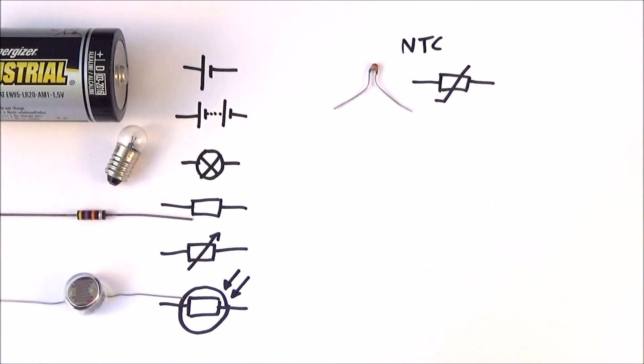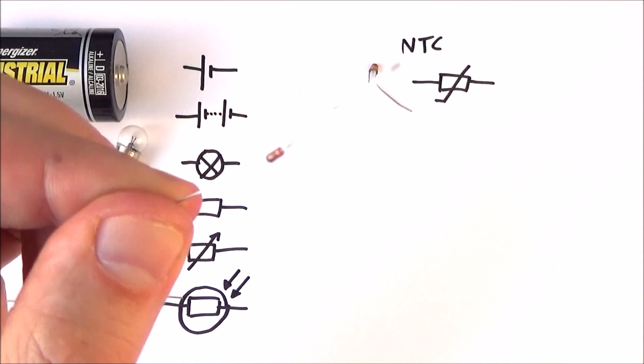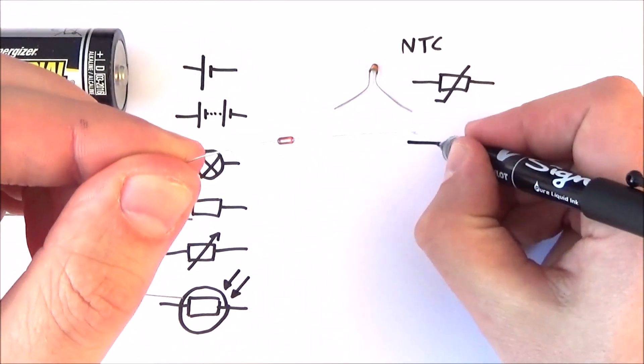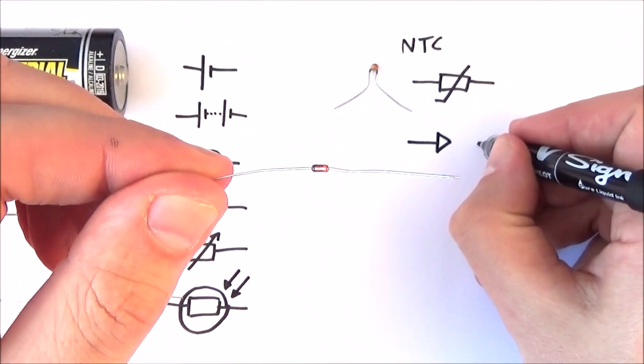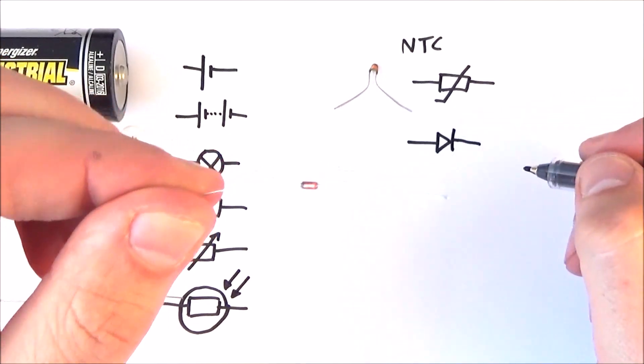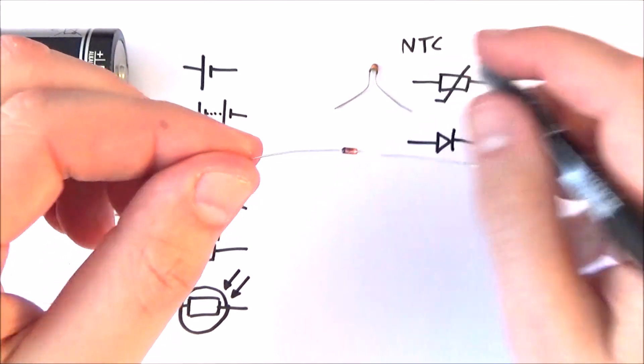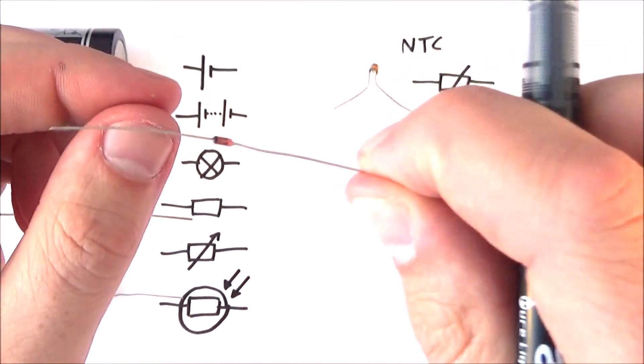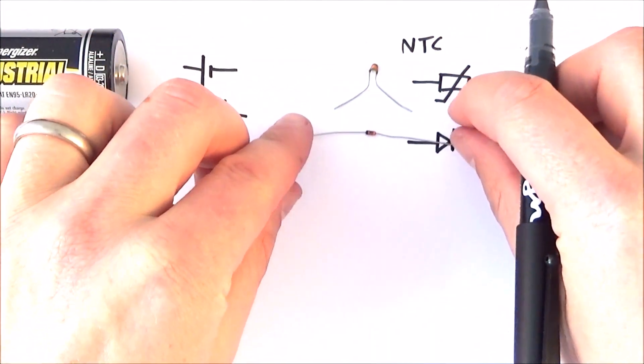We also have a thing that is basically our one-way valve, and what this does is it lets the current go through in one direction, but anything going the other direction is stopped. This is what we call a diode. So the diode actually looks a bit like a resistor, but it's a different component.